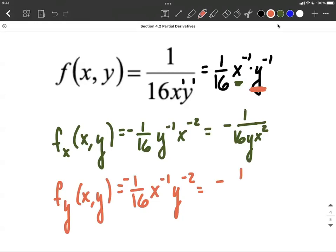Finally, cleaning this up with positive exponents gives us negative 1 over 16xy squared. I hope this helps as you're working on partial derivatives. Understanding negative exponents really makes a big difference. Good luck.